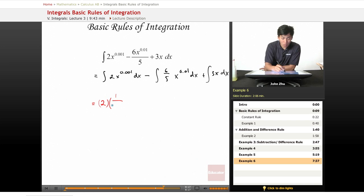It's 1 over 1 plus 0.001 times x to the 1 plus 0.001 plus c minus 6 over 5 times 1 over 1 plus 0.01 times x to the 1 plus 0.01 plus c.